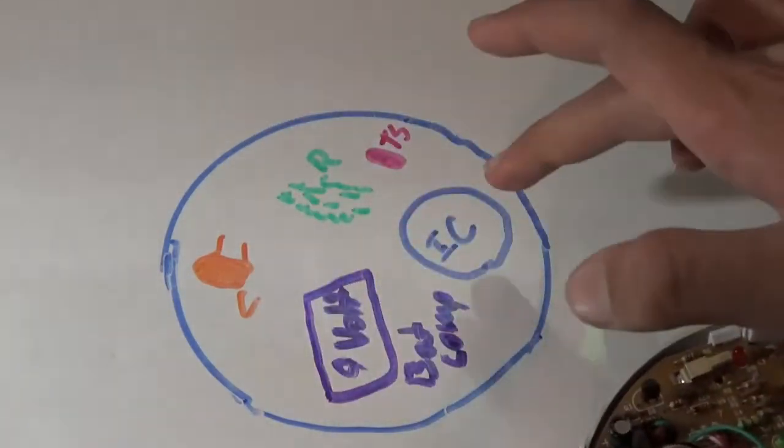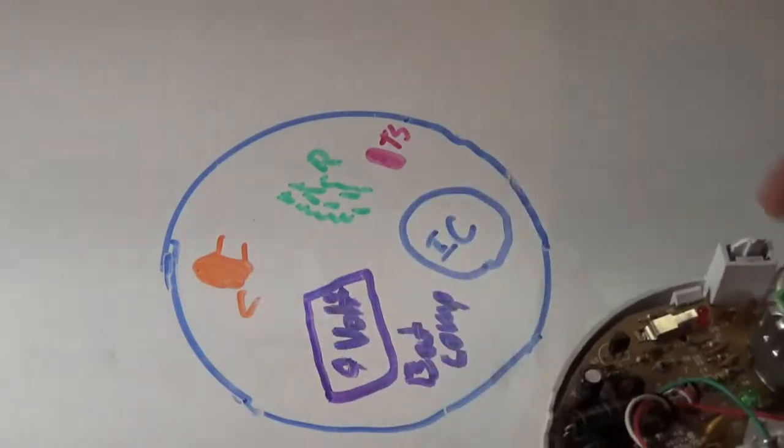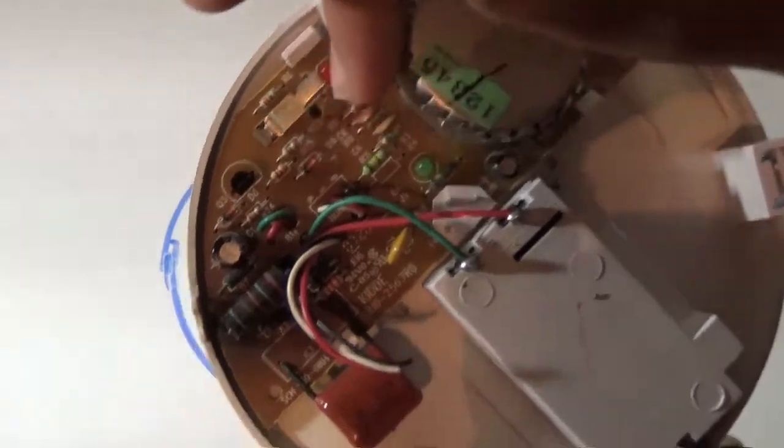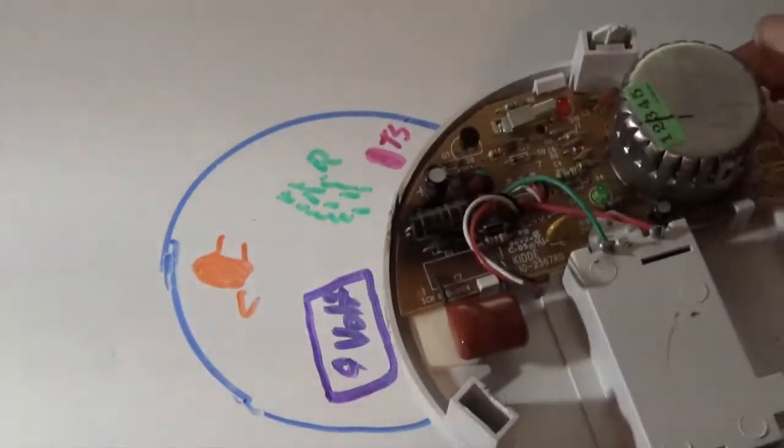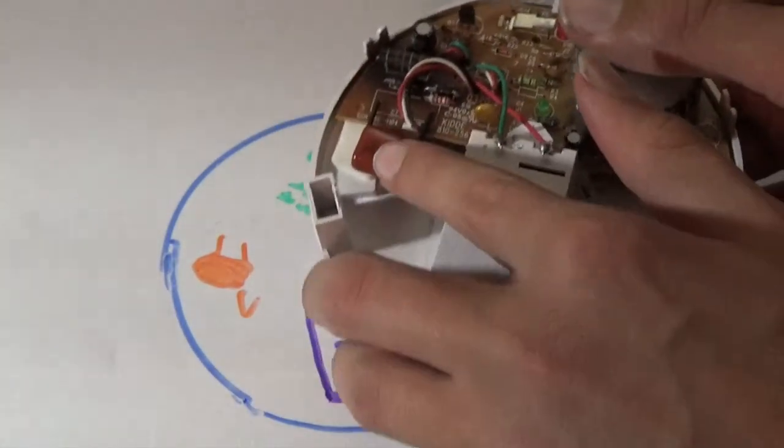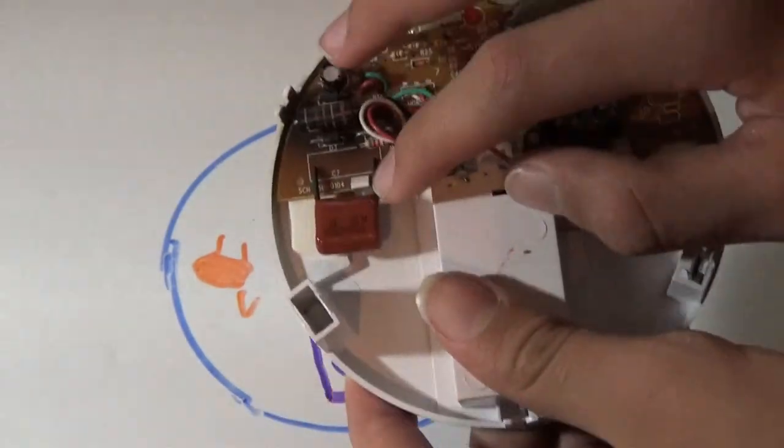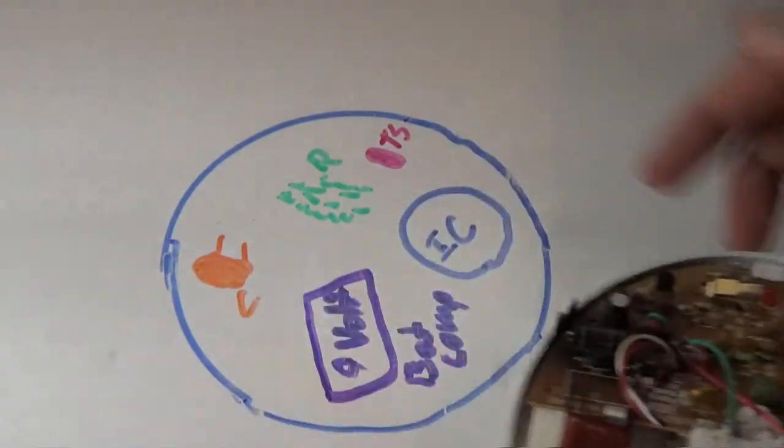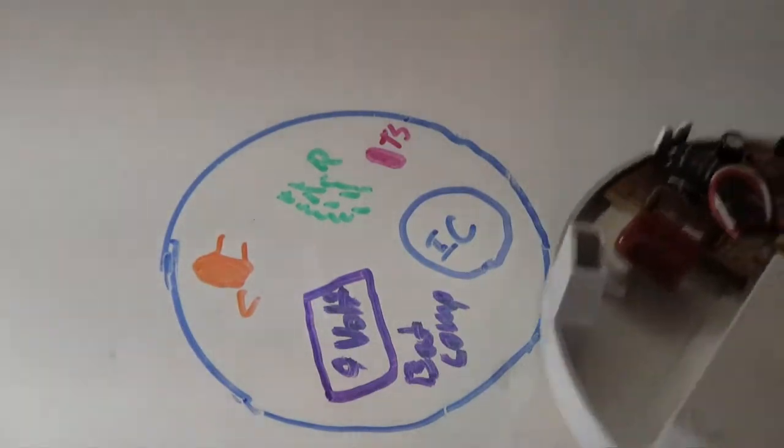So right here is the ionization chamber which is where the reaction happens, and then right here are your resistors all along here which are labeled R, and then you have your test switch which is right here TS, and then you have your capacitor. Now there are multiple capacitors on here but this is the one you see first which is labeled C, and then you have your 9V battery compartment which is BATCOMP, short for battery compartment.